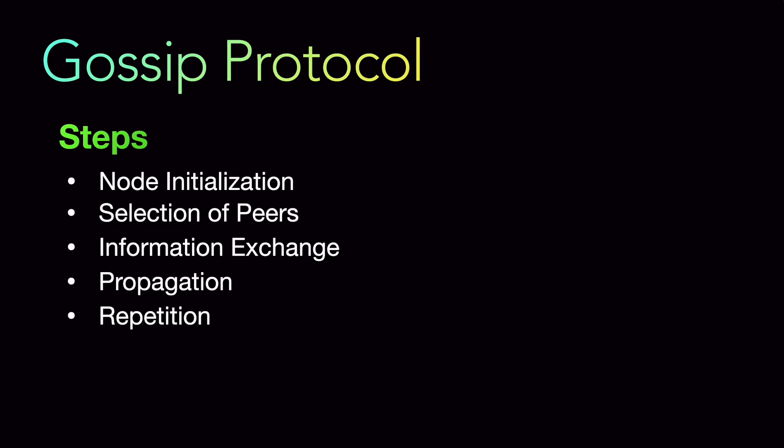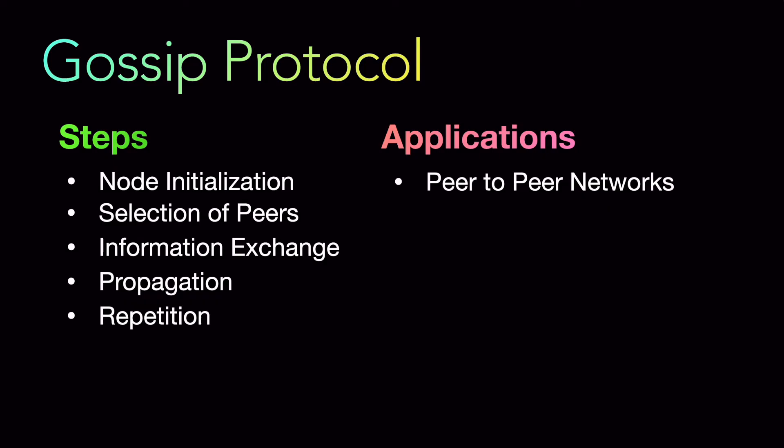Now, where is gossip protocol used? It is used in a variety of applications. One of the first is peer-to-peer networks — any kind of peer-to-peer network where information is exchanged from node to node. Gossip protocol is very important here because of the decentralization and scalability it offers. It also offers adaptability — if you add another node to the system, the process of repetition and propagation continues, and the new node gets selected as a peer in every round. So every server in the network ends up having the latest information, making it very adaptable to scaling up when nodes are added and scaling in when nodes are removed or go down.